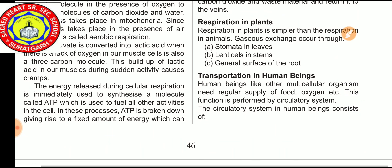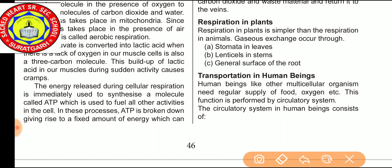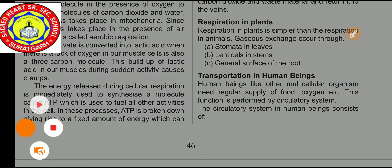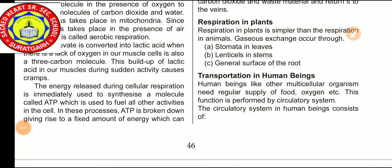Now we discuss respiration in plants. In a plant, there is no specific respiratory organ — only gaseous exchange is present. Respiration in plants is similar to respiration in animals. Gaseous exchange occurs through stomata in leaves and lenticels in stems. Lenticels are also present on the general surface of the root. In this chapter we have discussed two life processes: first is nutrition including the human digestive system, and second is respiration in plants and animals.